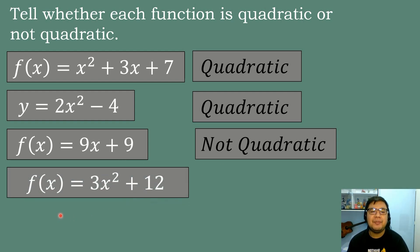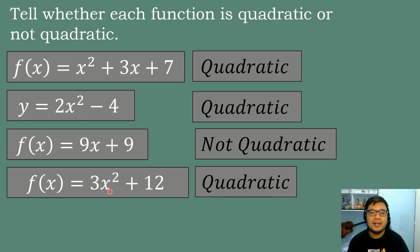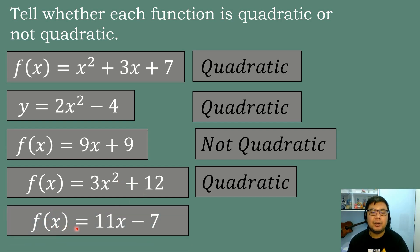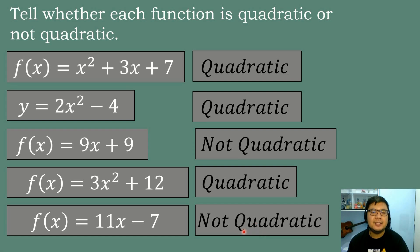Next, f(x) = 3x² + 12 — it is a quadratic function because it has an exponent of 2. And our last example: f(x) = 11x − 7 — this is not quadratic because the exponent of the leading term is only 1. It is raised to the first power, therefore this is a linear function and not a quadratic function.